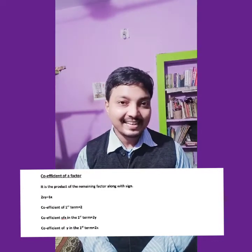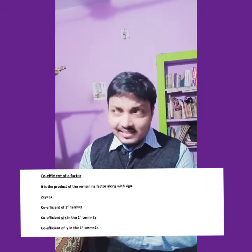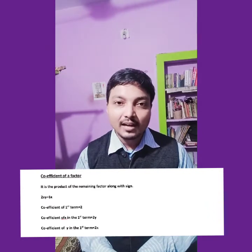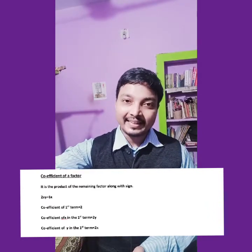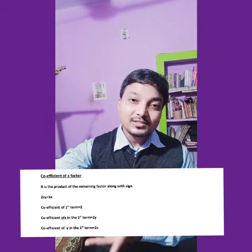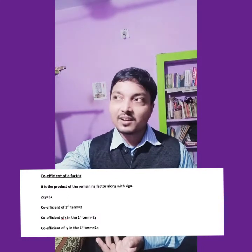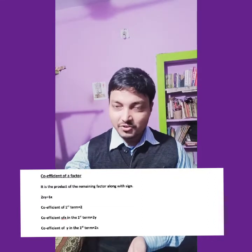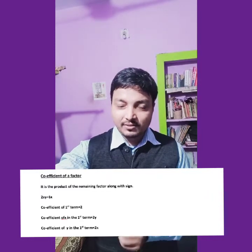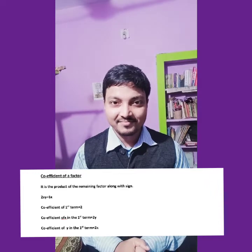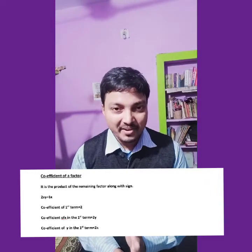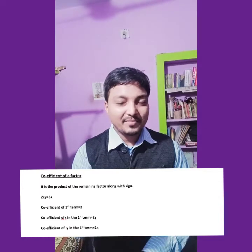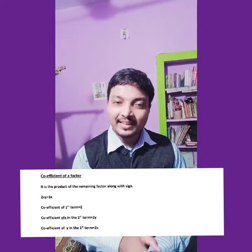One term is 2xy, another is 6x. Normally the coefficient of the first term is 2, and the second is 6. But if someone asks for the coefficient of y in the first term, you have to hide y. The remaining two factors are 2 and x, and their product is 2x. So 2x is the coefficient of y. Similarly, if asked for the coefficient of x, hide x — then 2 and y remain, giving 2y as the coefficient of x.